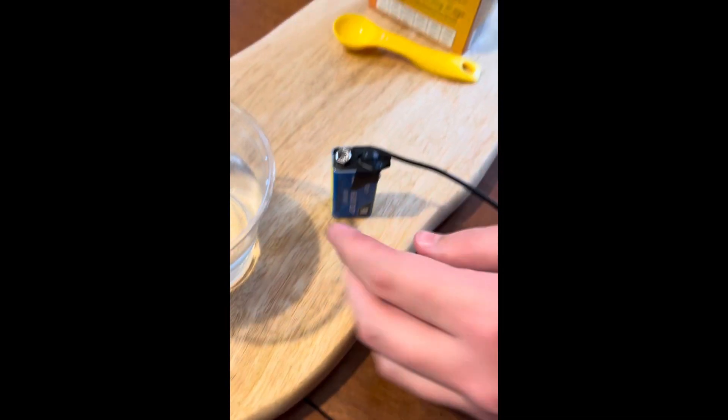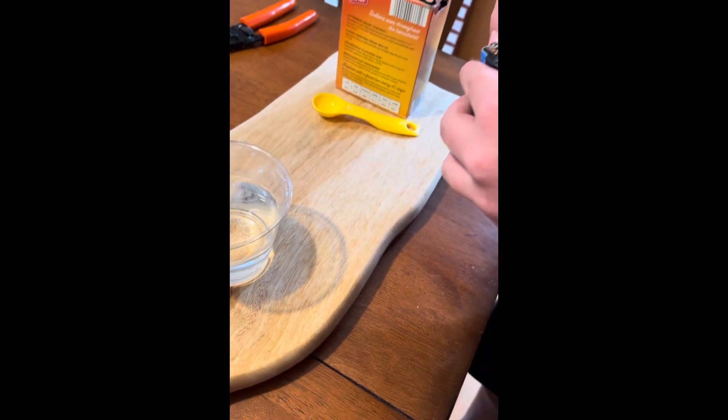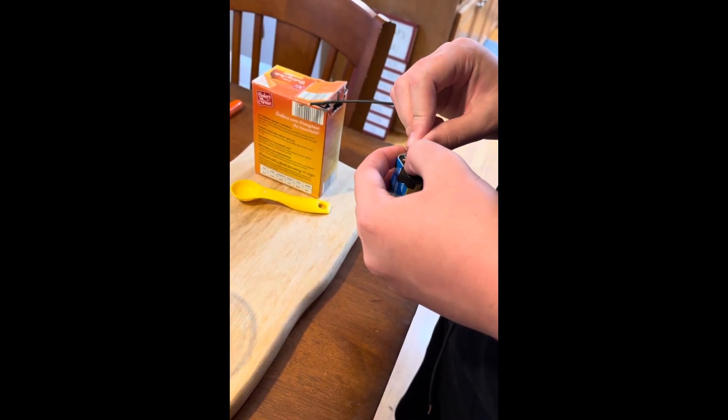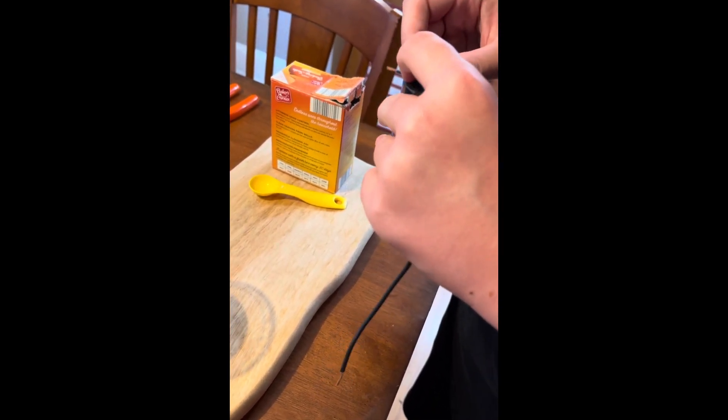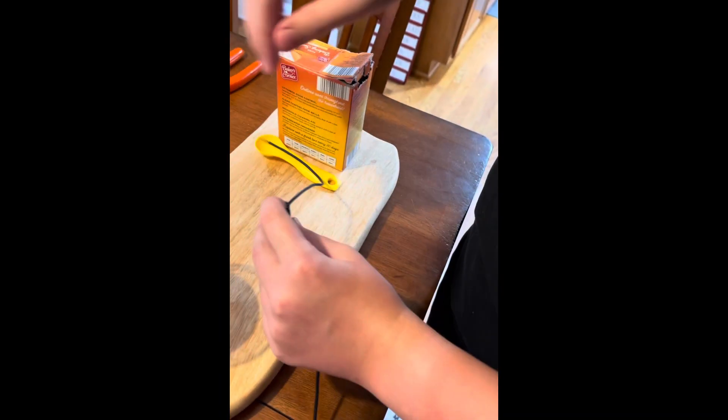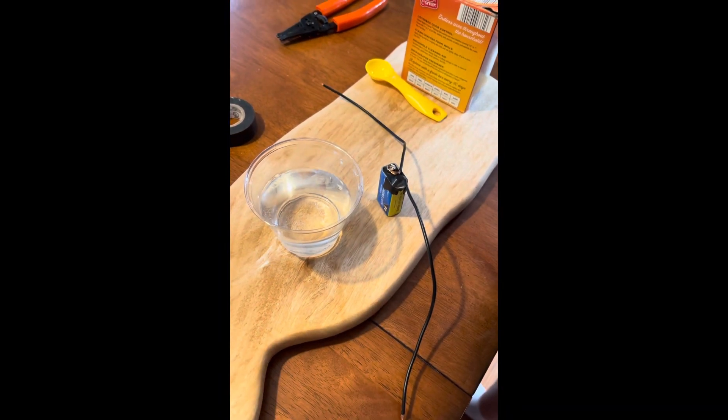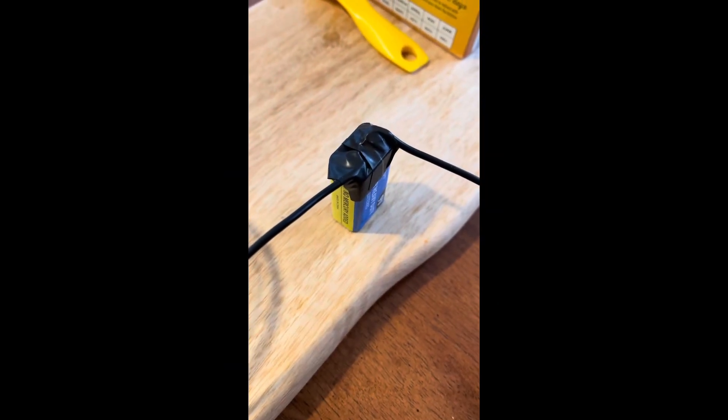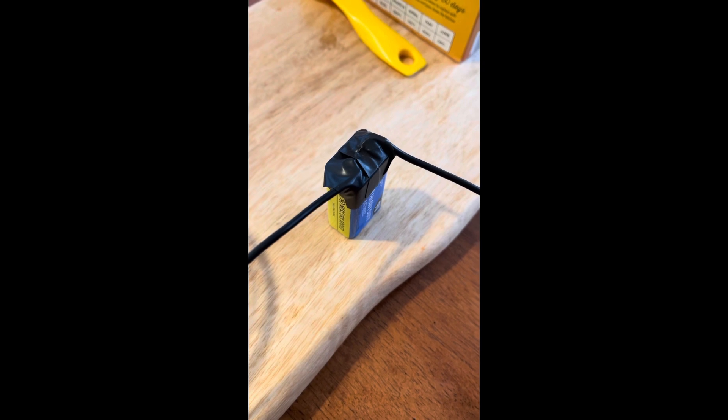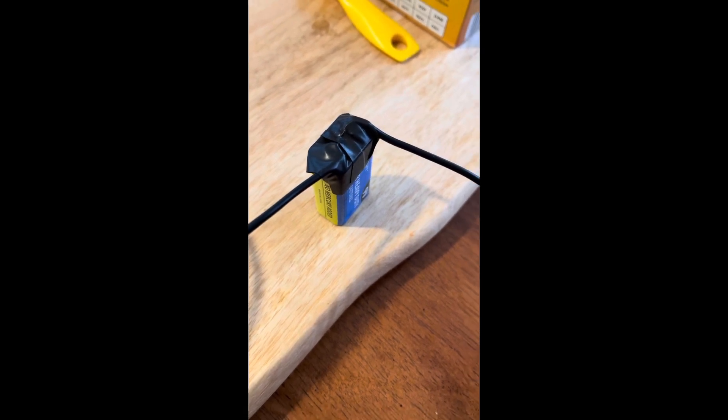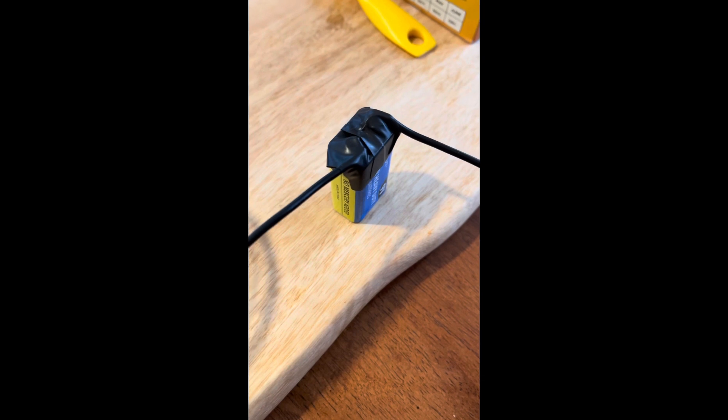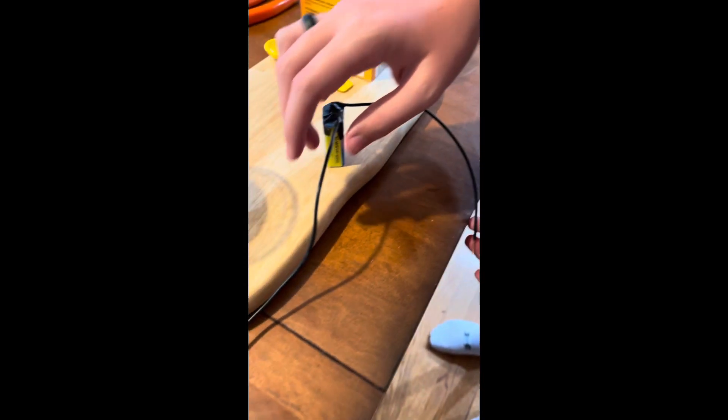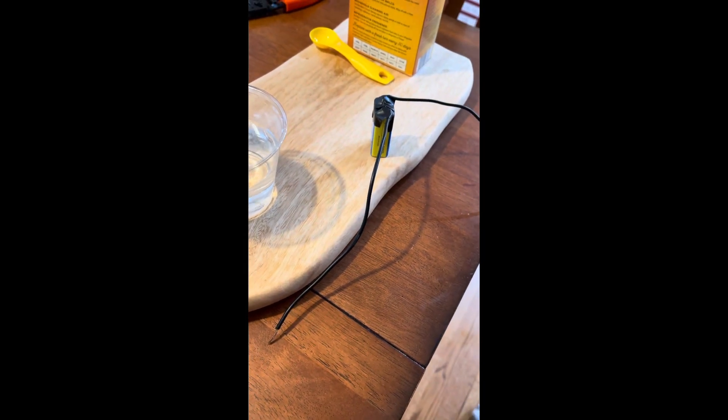Step five says to go ahead and repeat step four with the other wire and the other battery terminal. Now, we'll go ahead and get that. I'll be right back. Okay, so again, that was step five. Now you have two wires attached to the battery, one at each terminal. Now, do not allow the bare ends of these wires to touch each other. So we have one way over here and we have one way over there. So we do not want those two wires to touch.